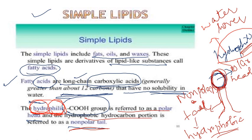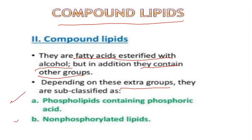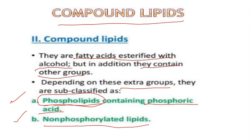Compound lipids are fatty acids esterified with alcohol, but in addition they contain other groups. There are two classes: phospholipids, which contain phosphoric acid, and non-phosphorylated lipids. In compound lipids you also have glycolipids, which contain a glucose unit.